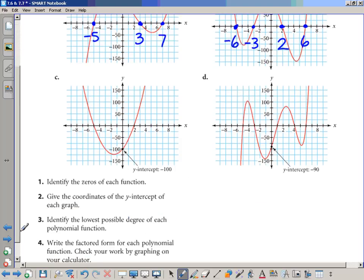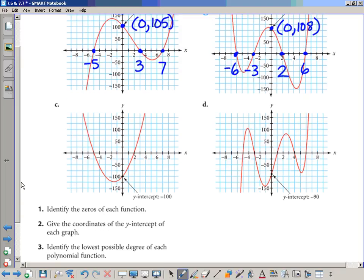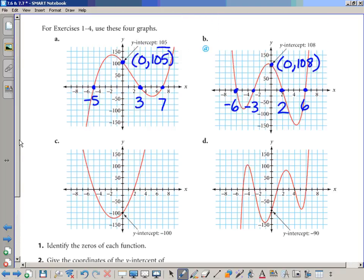Third, we want to identify the lowest possible degree of each polynomial function. To do this, you want to count the number of times that the graph cuts through the x-axis. And you also want to consider whether those slices will be single, double, or triple roots. Now, I'll tell you this. For all of these graphs in parts A and B, C and D, for all of them, these are all single roots. So all we have to do, remember, this is from class today...